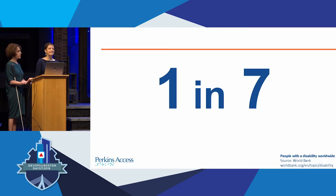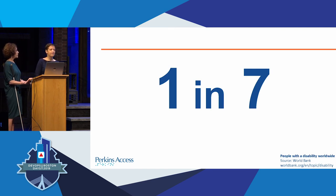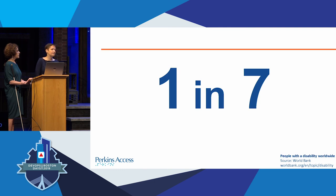One in seven — that is a very conservative estimate of the number of people worldwide that have a disability. That's about 15 to 20% of the population. And it's important to remember that many disabilities are not visible. People around you all the time have disabilities and you may not realize it.